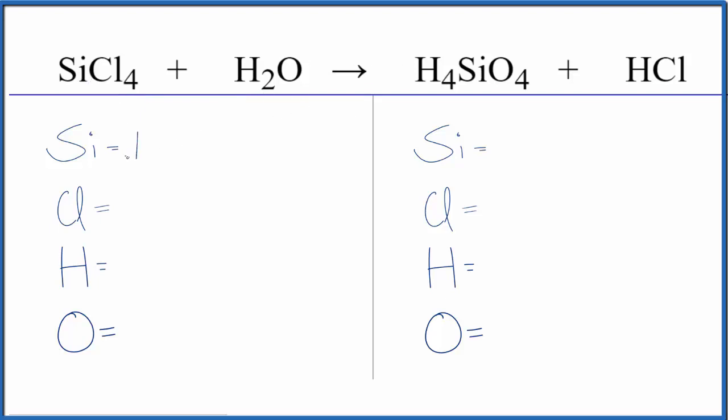We have Si, one silicon atom, four chlorines, two hydrogens, and one oxygen.